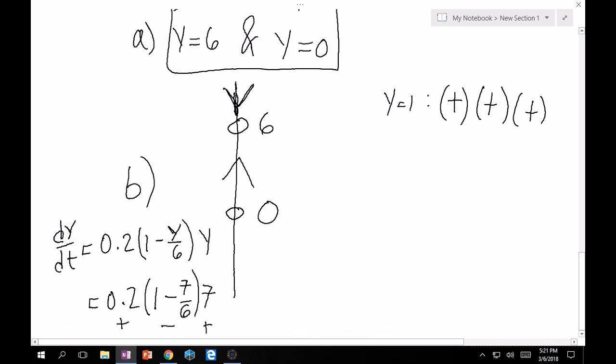And then below, let's try y equals negative 1. So negative 1, so 0.2 is always positive. And then (1 minus negative 1/6), that's going to be positive, but times minus 1 is going to give me a negative. So positive, positive, negative is a negative. So there we go. That's our phase portrait. And this is perfectly fine. You can box this in. This is your final answer.